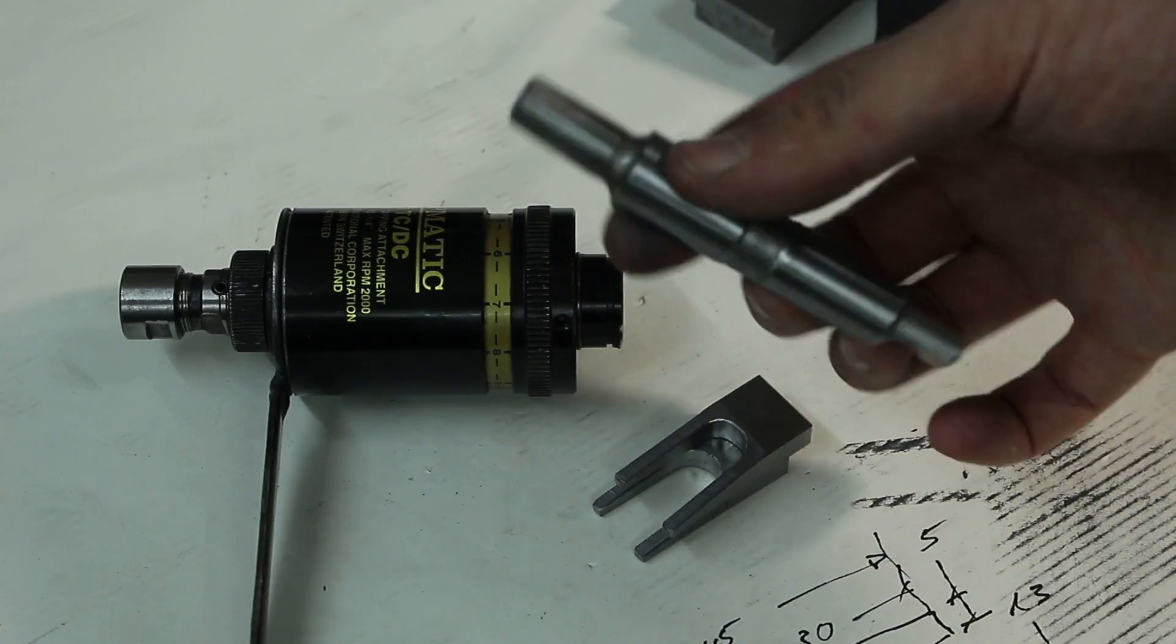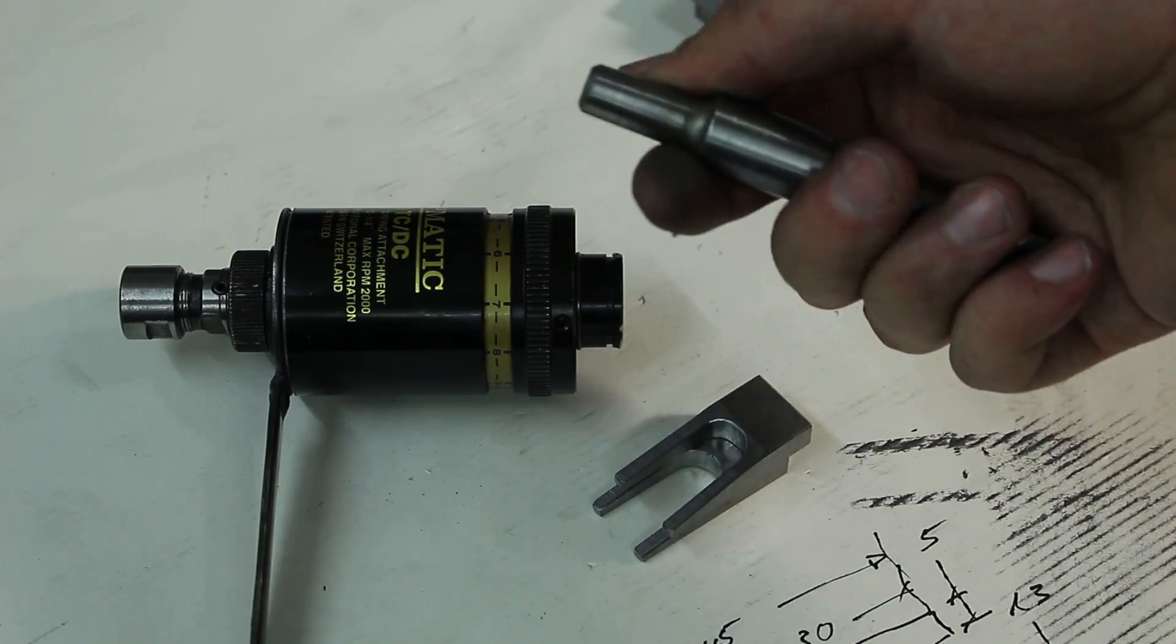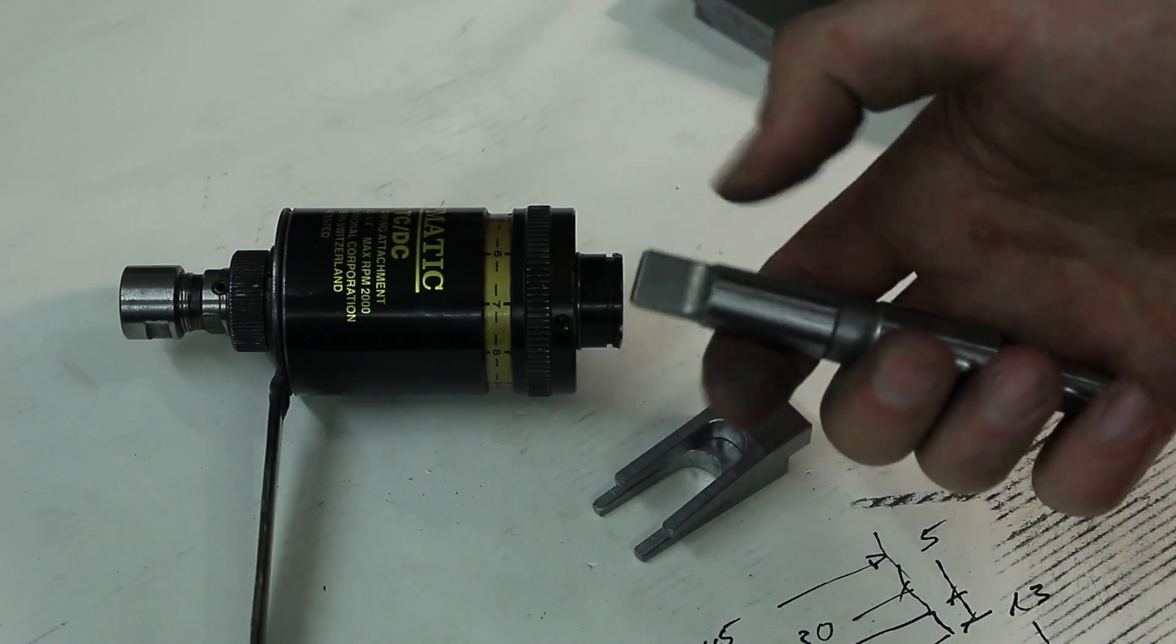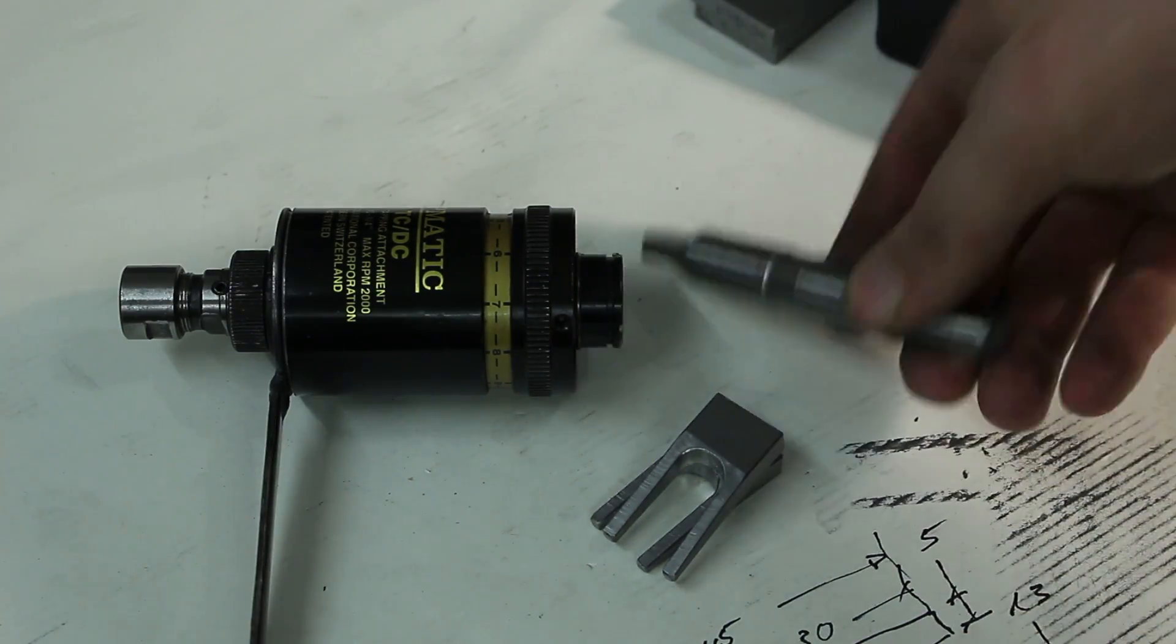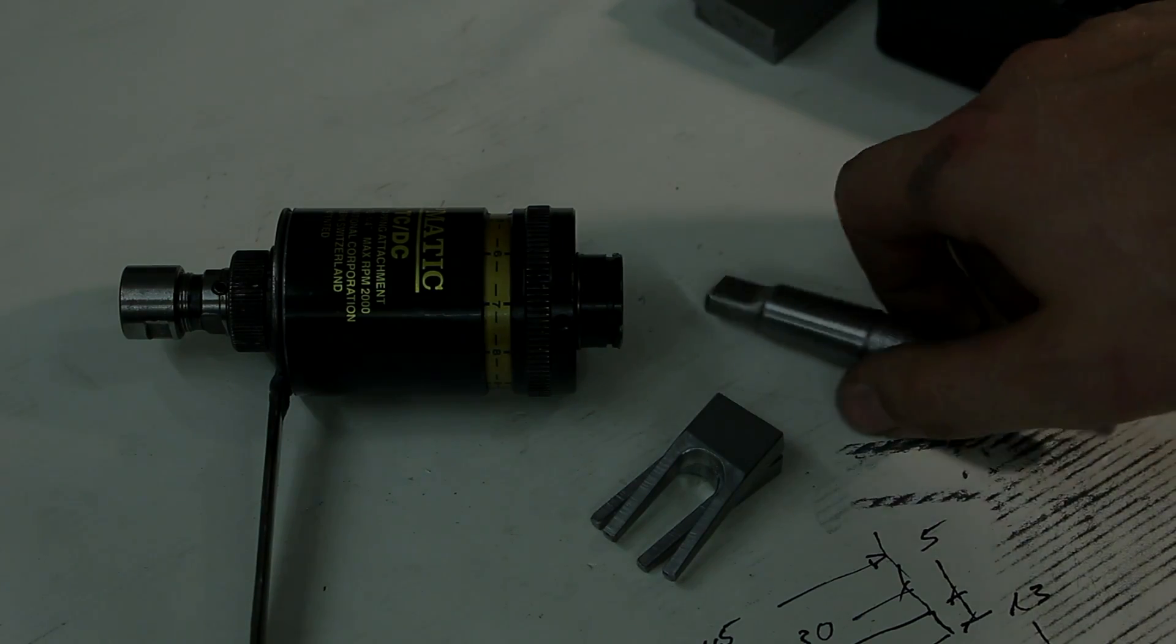I'm going to order a Morse taper 2 to B12 taper with a drawbar thread already in it. There is no need to mess around with this.